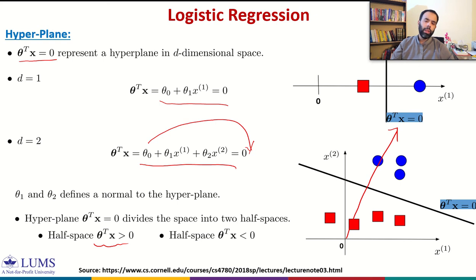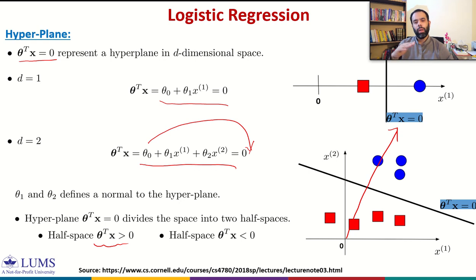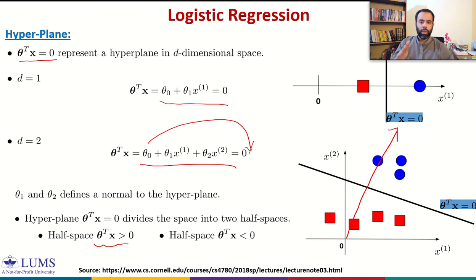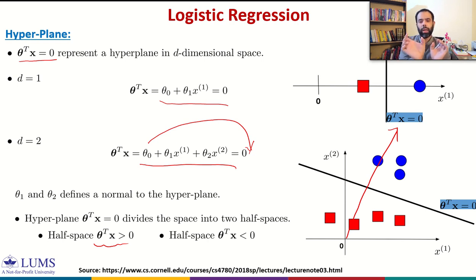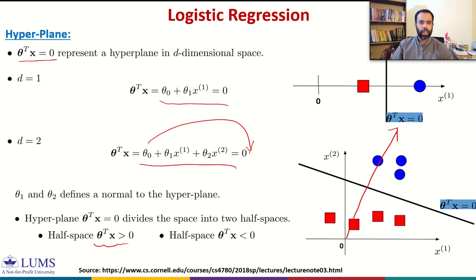The boundary is linear for a logistic regression classifier. We will always have linear boundaries if we stick to the original model, which has theta transpose X followed by a sigmoid function. Due to theta transpose X in that product we have linearity, and due to this linearity we get linear boundaries — straight line boundaries — and hyperplanes in the feature space as the decision boundary.